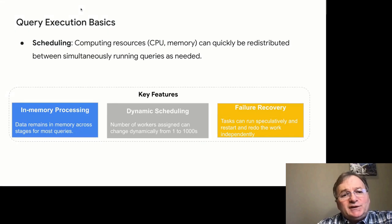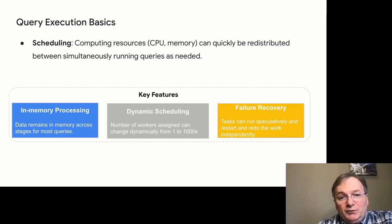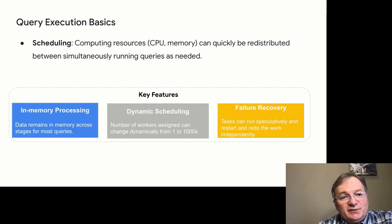Some interesting facts about how BigQuery runs queries. BigQuery tries to keep data in memory during query processing if possible. If you're running a medium-sized query — say, something that processes one terabyte of data — in an idle project with idle resources, quite likely intermediate data will never be stored on disk or even on SSD until we finally persist query results. BigQuery tries to do in-memory processing whenever possible.